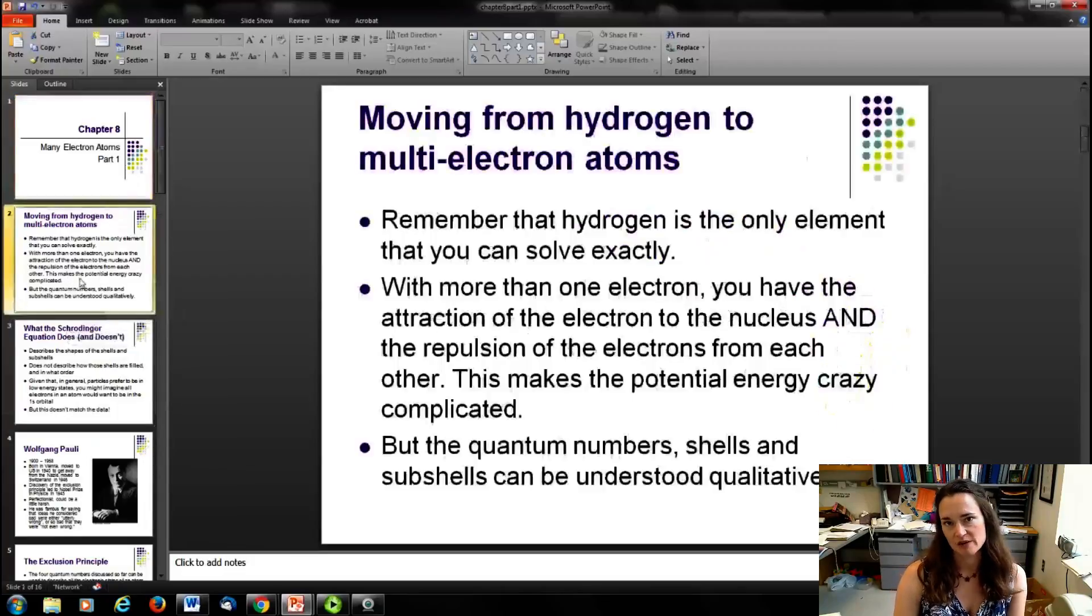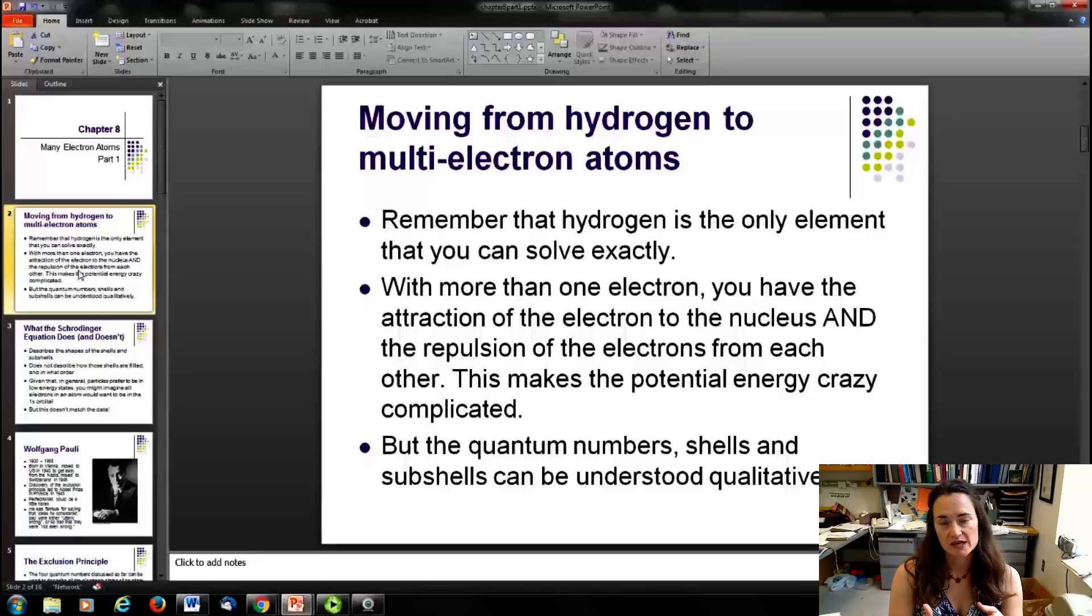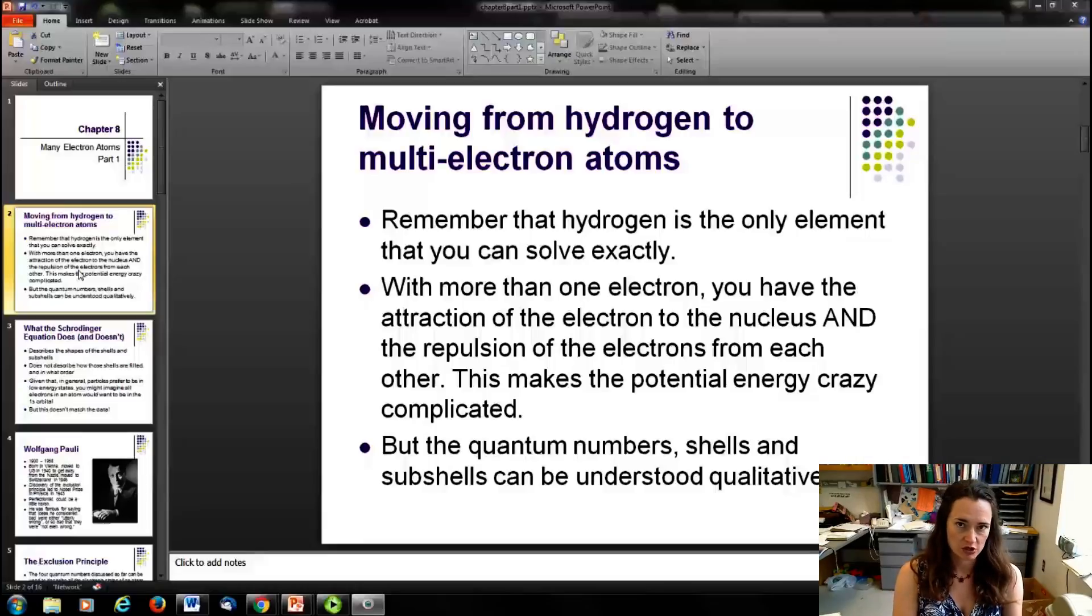What we're doing in this chapter is moving away from hydrogen and into atoms with more than one electron. Remember that hydrogen is the only element that you can actually exactly solve. The Schrödinger equation can be solved exactly for one proton and one electron. If you get rid of all the electrons except one for elements like lithium or helium, you can also use the Schrödinger equation to solve those. But you can only do it for one electron.